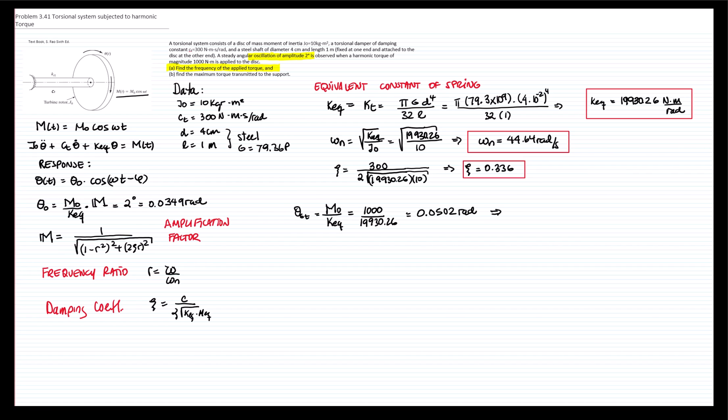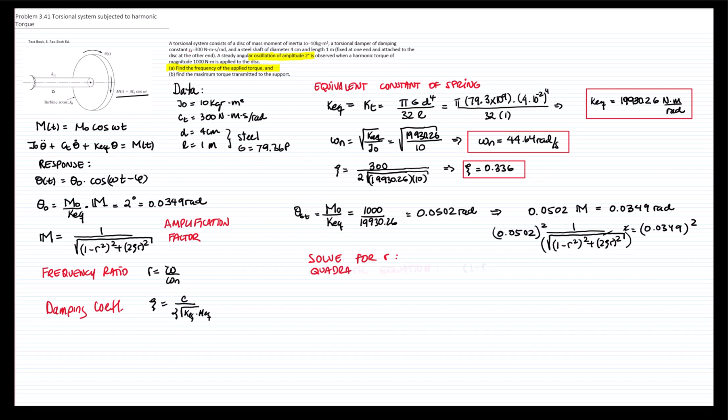Therefore, to find the frequency, we get the following equation: 0.0502 times the magnification factor is equals to 0.0349 radians. Now we know the expression for the magnification factor is equals to 0.0349. So I'm going to square both sides of the equation. So therefore, the square root cancels out. I would like to solve for r and I get a quadratic equation.